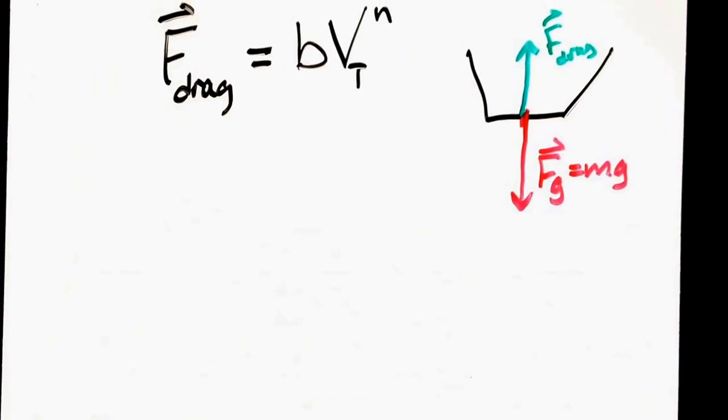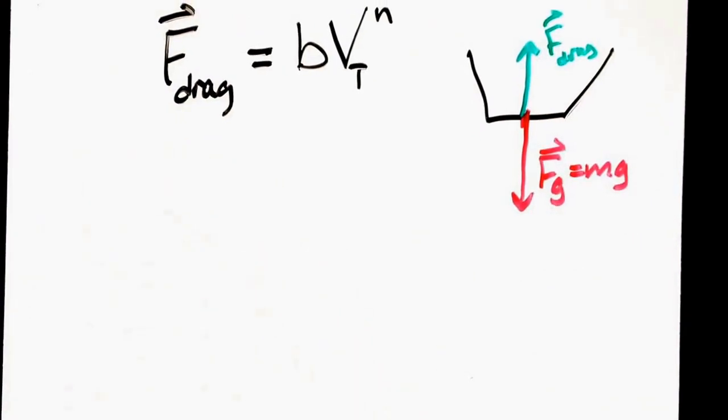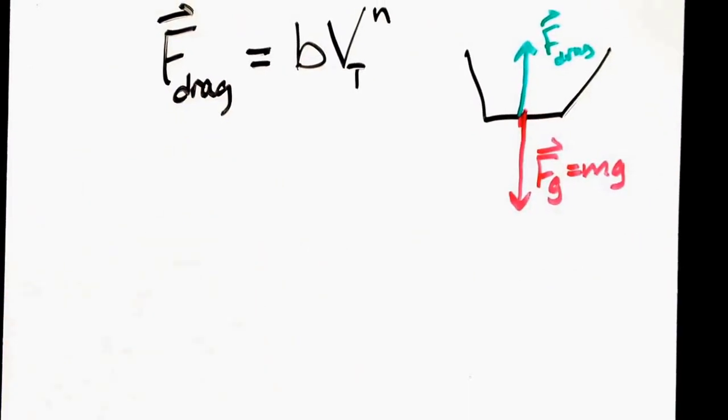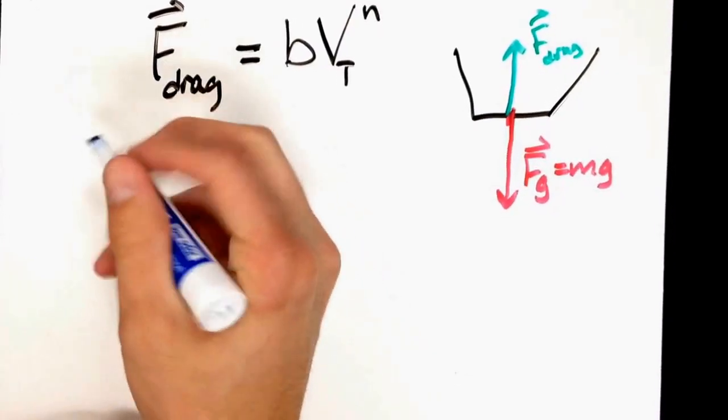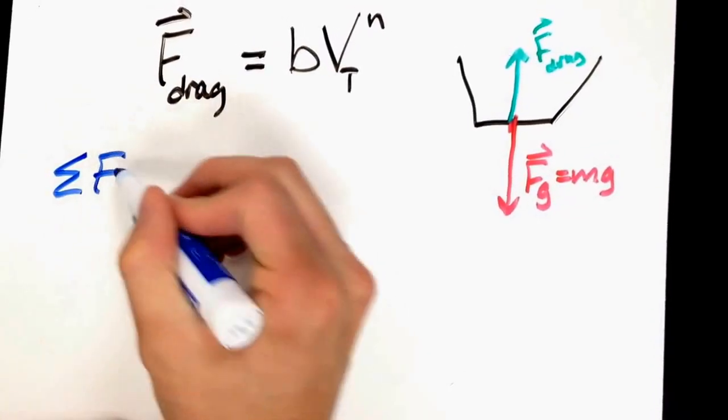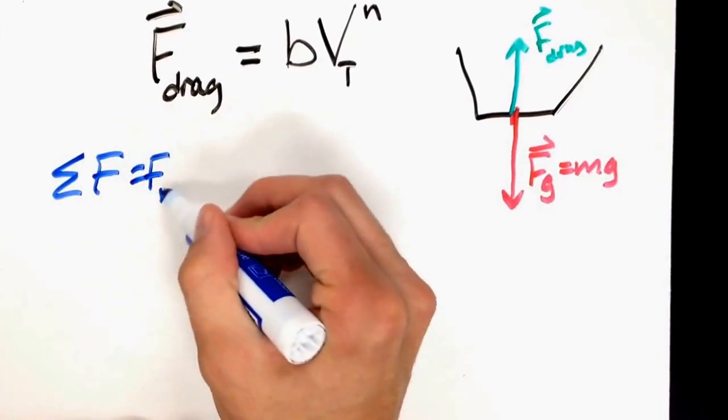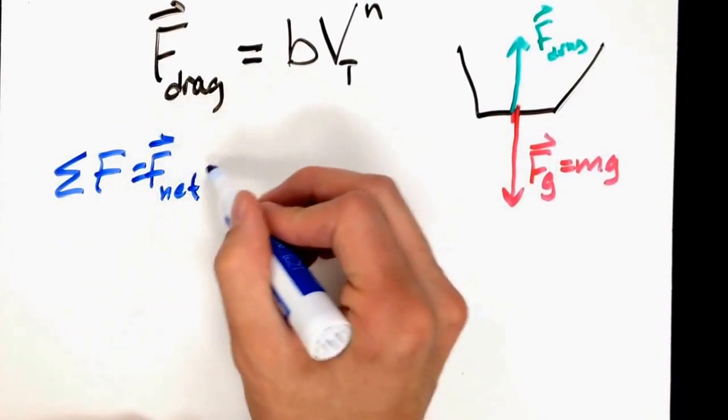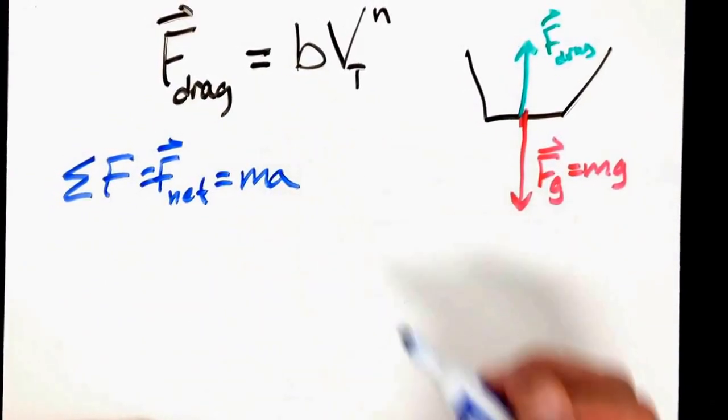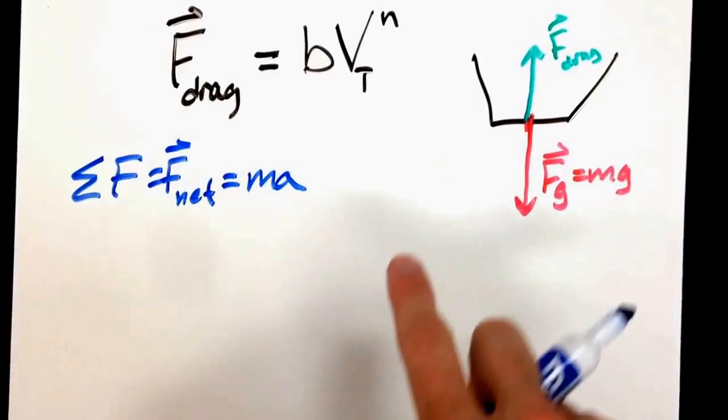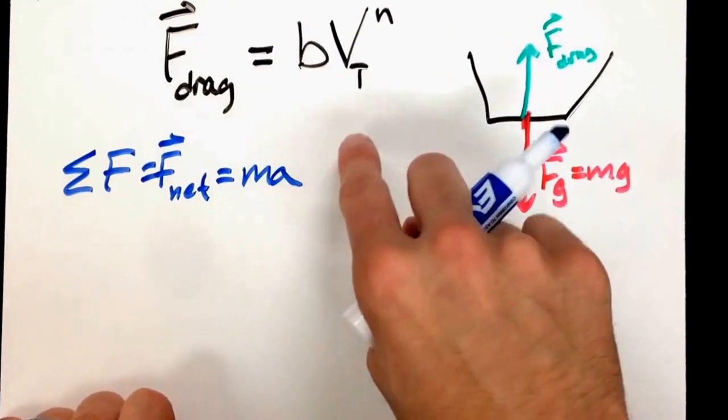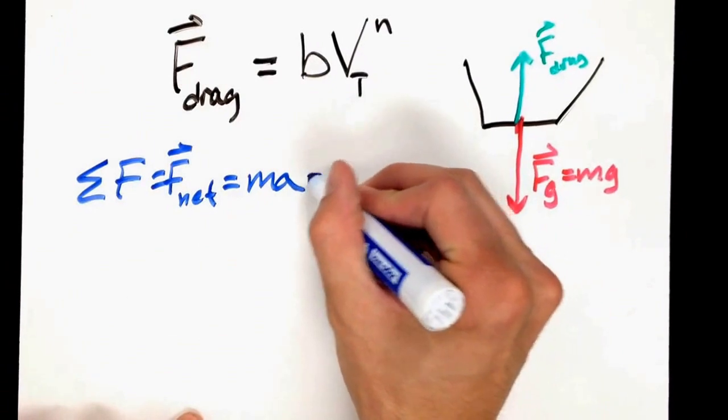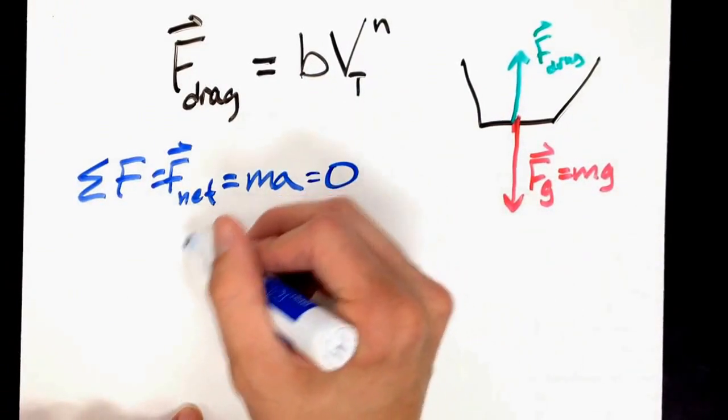If we think about Newton's second law, the sum of forces equals the net force, which equals mass times acceleration. At terminal velocity, we have no acceleration, which means that equals zero.